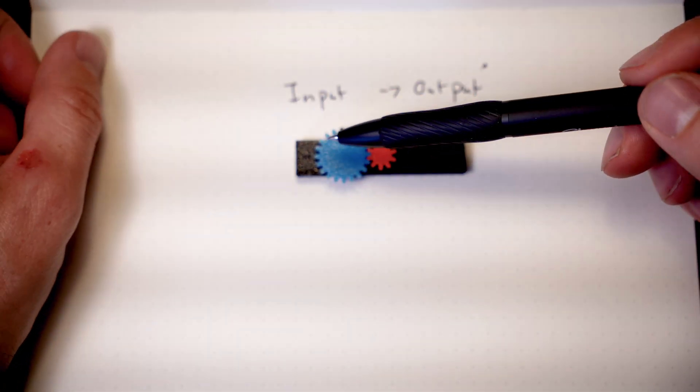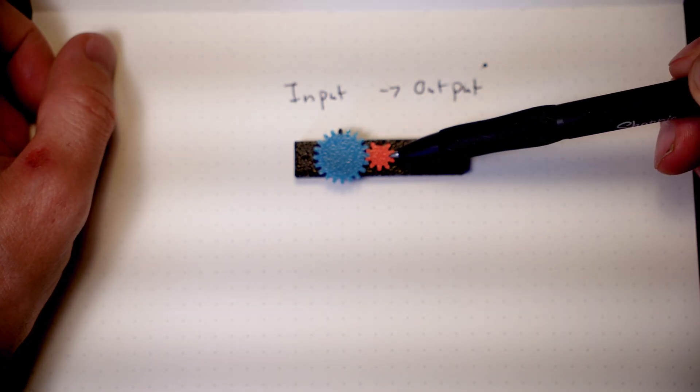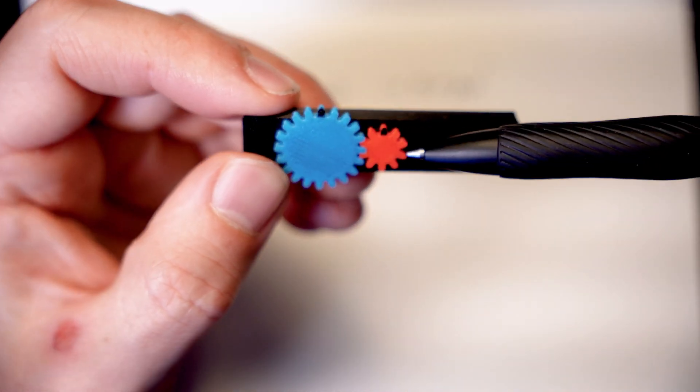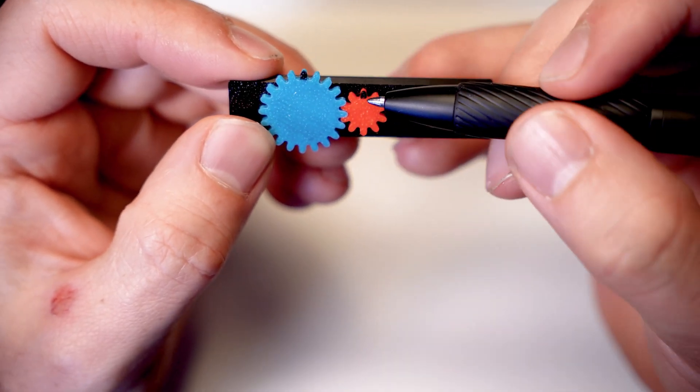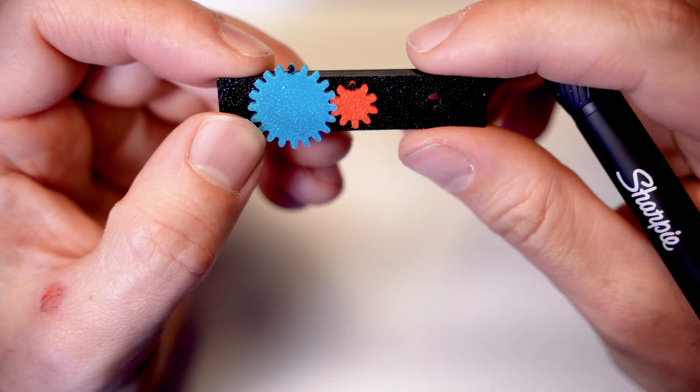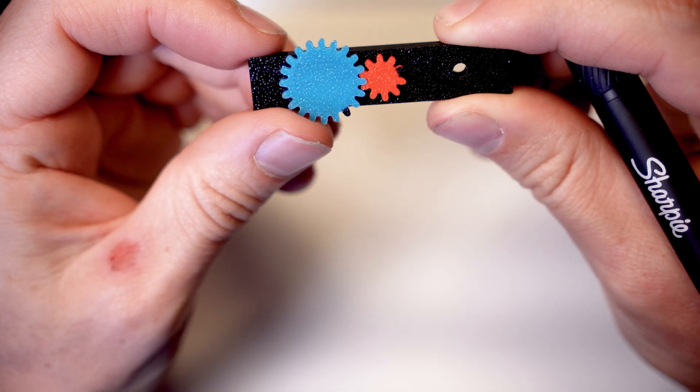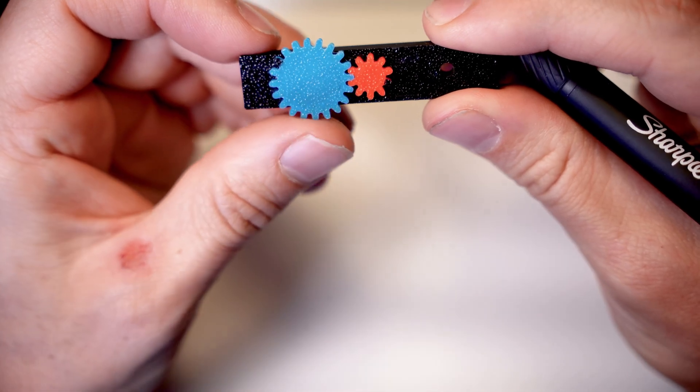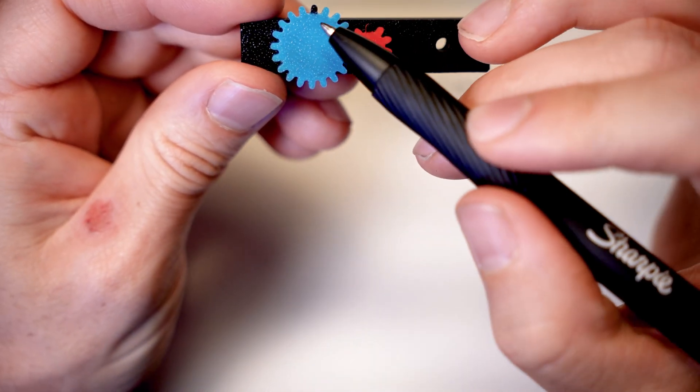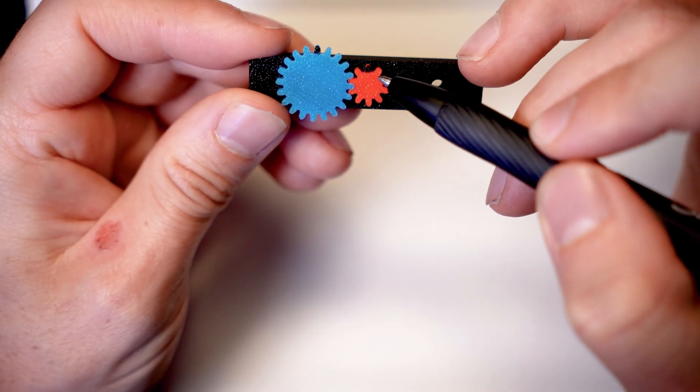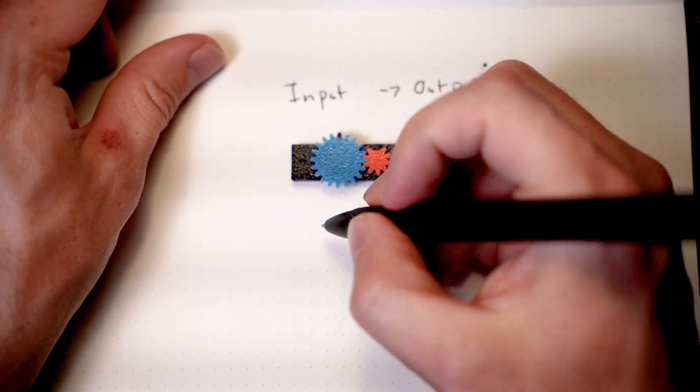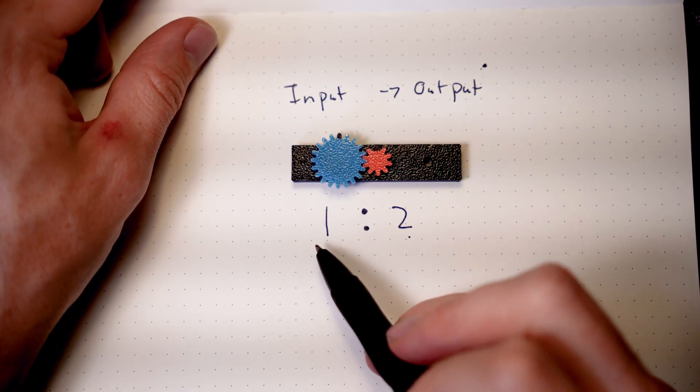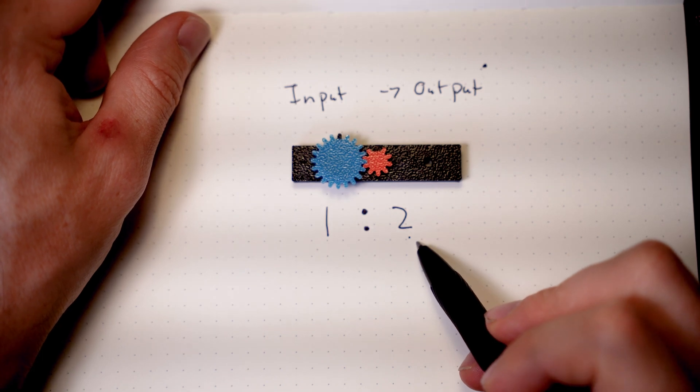So let's assume that in this point, the blue is our input and the red is our output gear. Let's go ahead and count for each time that I rotate this blue gear, we'll see how many rotations this red gear makes. So let's go ahead and see how many times it takes for this black line to get back up to the top. So as I rotate this around, that's one rotation of the red gear. And let's keep rotating. And that is one full rotation of the blue gear and two rotations for the red gear.